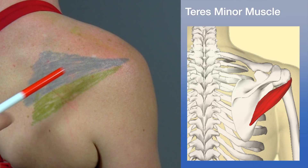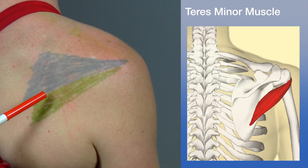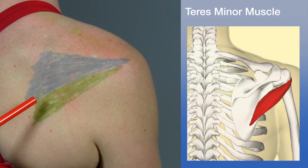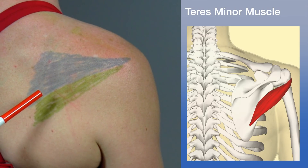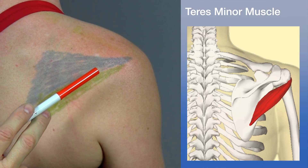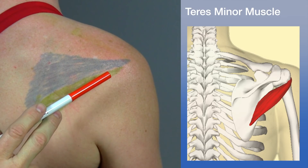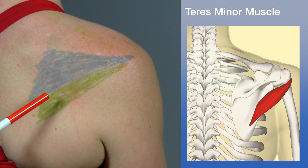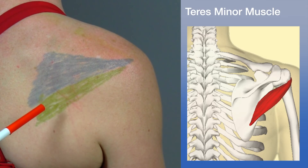The next muscle is the teres minor, shown in green. It originates from the lateral border or posterior surface of the scapula and inserts on the greater tubercle below the insertion of the infraspinatus. Its action is lateral rotation of the arm.